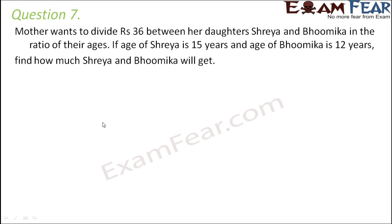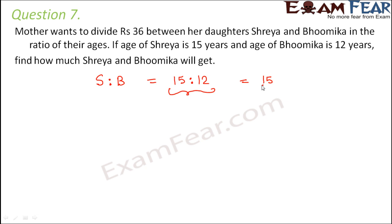Let us first find the ratio into which the mother wants to divide the total amount. The ratio is the ratio of ages of Shreya and Bhumika, which is 15 is to 12. This fraction is not in its simplest form — one common factor other than 1 is 3, which is the highest common factor. So 15 is to 12 simplifies to 5 is to 4. The mother wants to divide the total money of 36 rupees in ratio 5 is to 4 amongst Shreya and Bhumika.